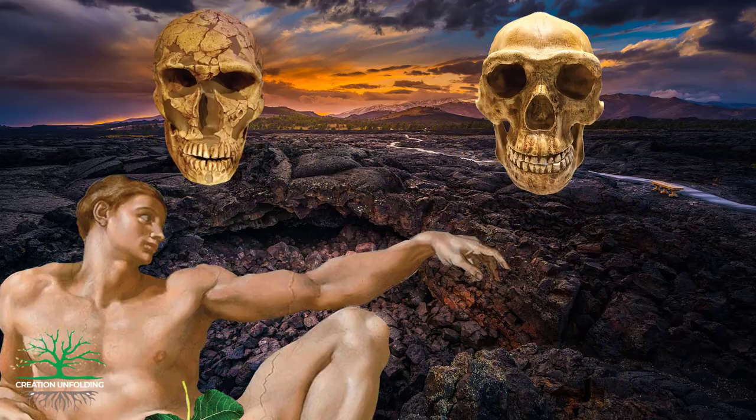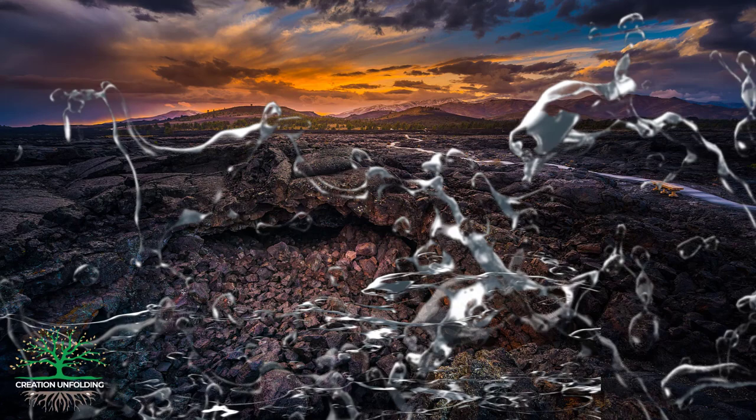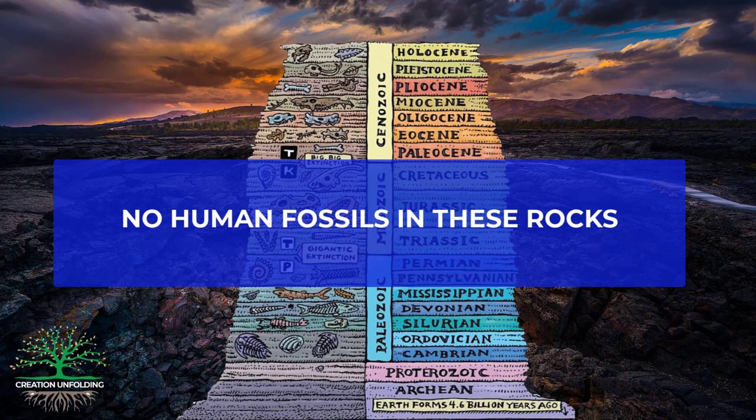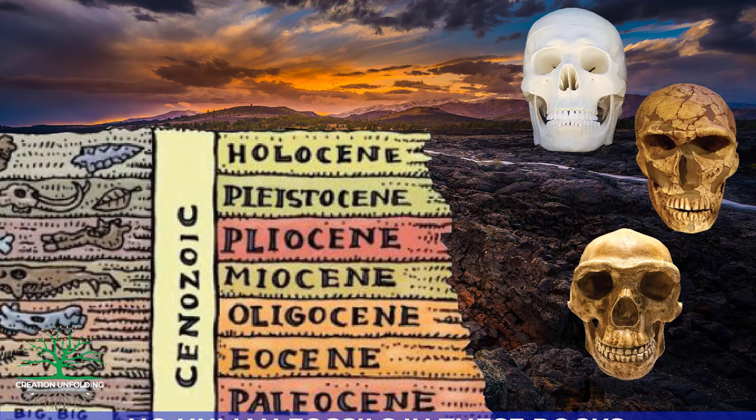Yet from a young-age creationist perspective, all humans — which include Neanderthals and Homo erectus — must be traced back to Noah and his family. They can't be traced back to Adam because most creationists believe that pre-flood humans left behind no fossil record, and that the fossils we do have come from the post-flood world. Since Neanderthals and Homo erectus appear first in that post-flood fossil record, even before Homo sapiens, it stands to reason that Noah and thus Adam more than likely looked something like this and not like this.